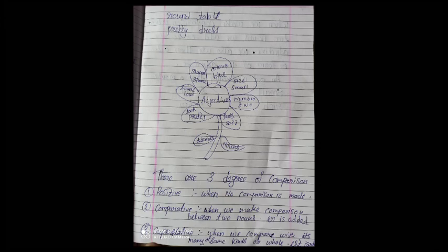So, adjectives are the words which describe shape, which describes color, size, number, feels or the quality, looks, or sound. Okay.